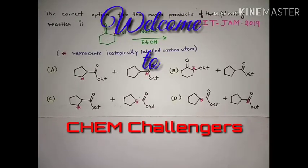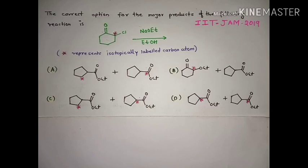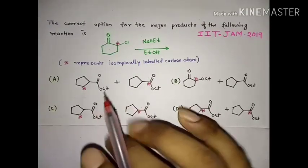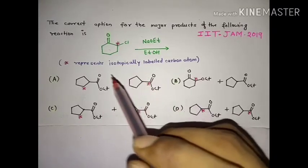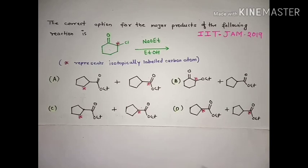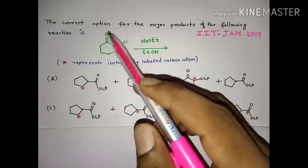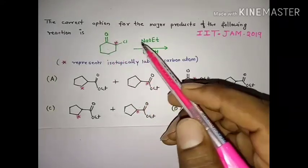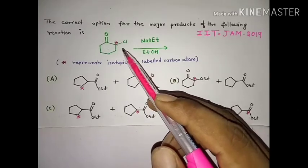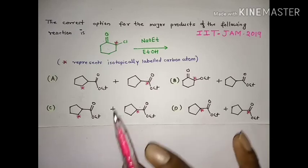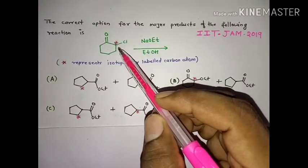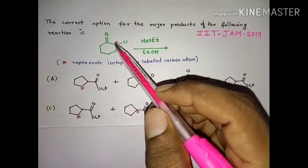Hello friends, welcome to this channel. In this module I will talk about a question and the concept behind it. The question came from the IIT JAM 2019 examination. We can see here that this is an alpha-halo ketone and a base is involved. There is a Favorskii rearrangement involved in this reaction. This is a name reaction and some additional concept is also involved.